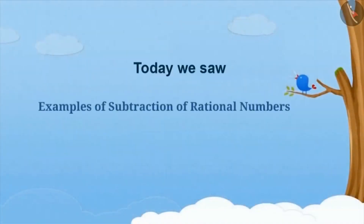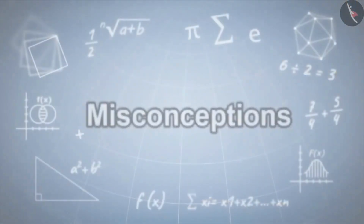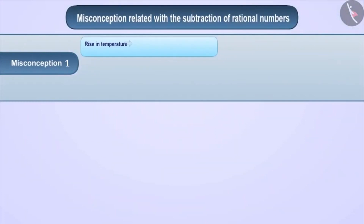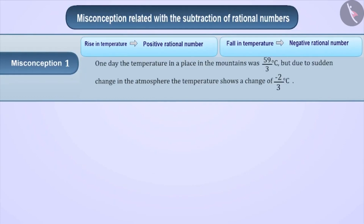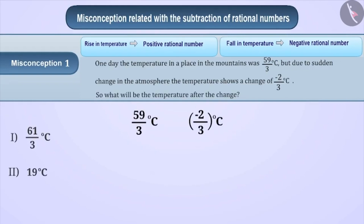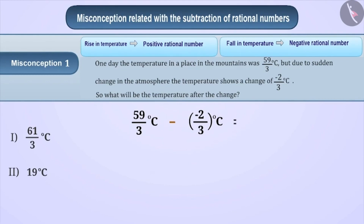We have seen examples of subtraction of rational numbers. Now let's clear up some misconceptions. One day, the temperature in a place in the mountains was 59/3 degrees centigrade, but due to a sudden change in atmosphere, the temperature shows a change of minus 2/3 degrees centigrade. What will be the temperature after the change? Children often have difficulty deciding whether to add or subtract these rational numbers. Some children subtract and get 61/3, which is wrong.